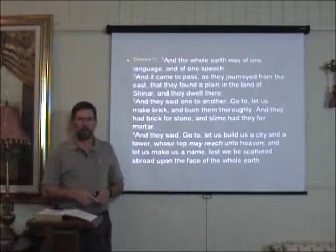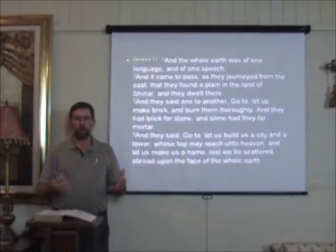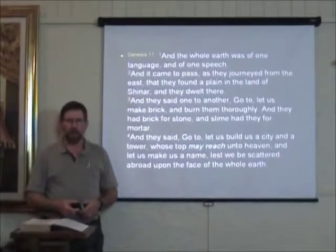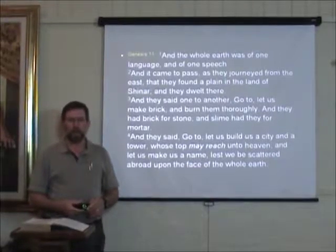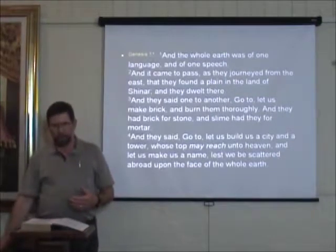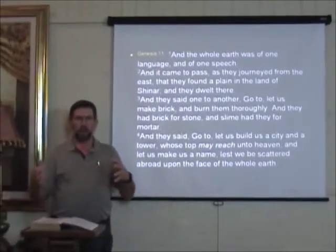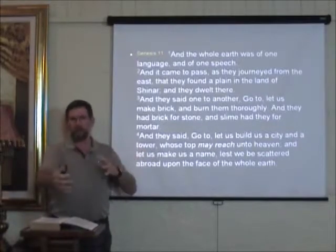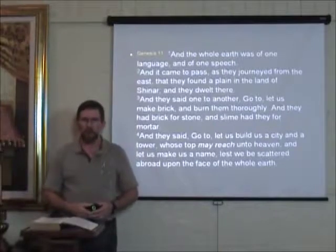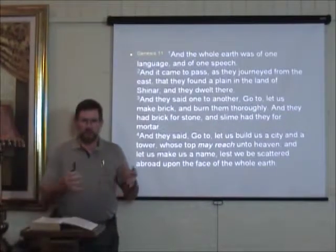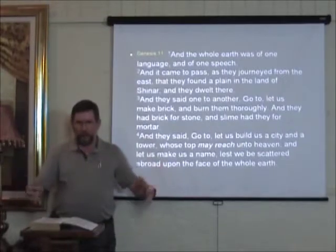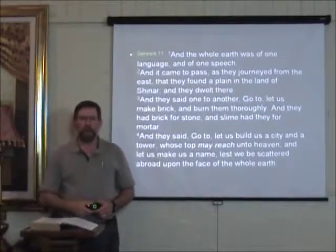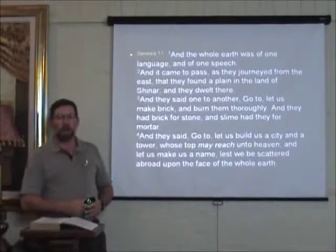Genesis chapter 11 verse 1 says: 'And the whole earth was of one language and of one speech. And it came to pass as they journeyed from the east that they found a plain in the land of Shinar.' Shinar is basically what we would call Mesopotamia — the upper regions of the Tigris-Euphrates river valley. That was the first place they went, into that fertile river valley, and they began to settle there.